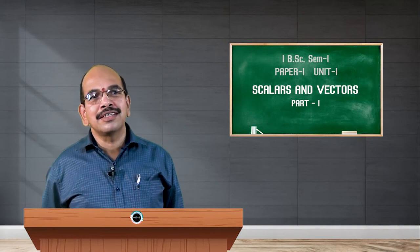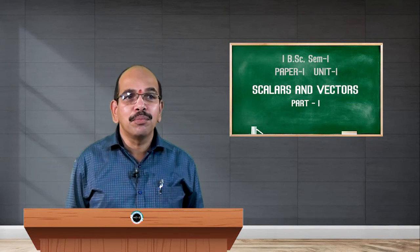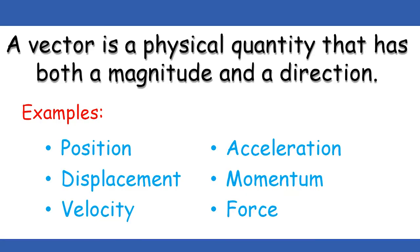Some other examples of vector quantities are position with respect to a standard point — position of an object has a direction. Similarly, displacement — in which particular direction the displacement has taken place — so direction is important along with the distance. Velocity is also a vector quantity. Acceleration, momentum, force — all these are vector quantities.